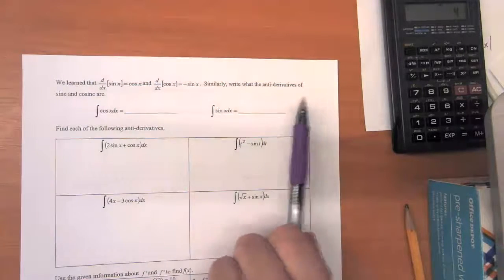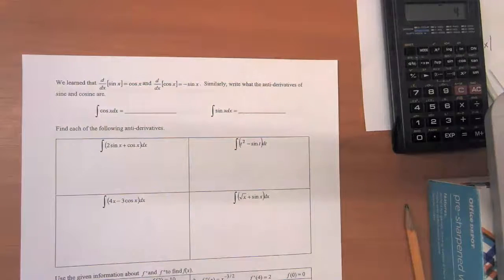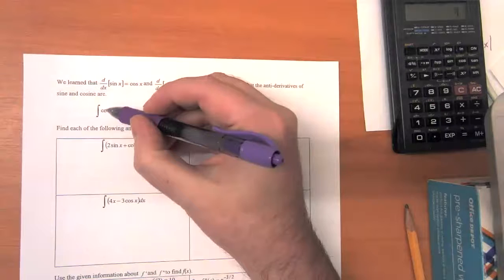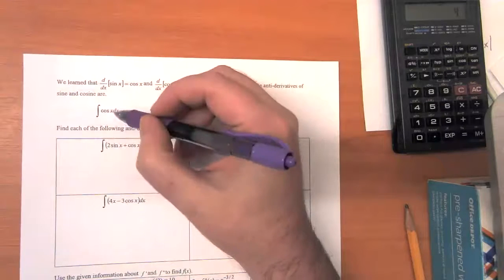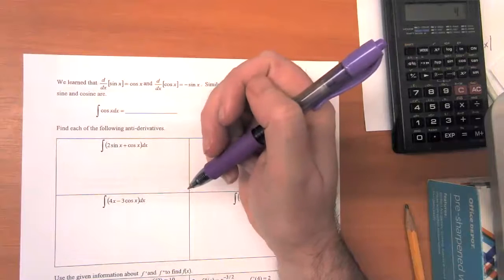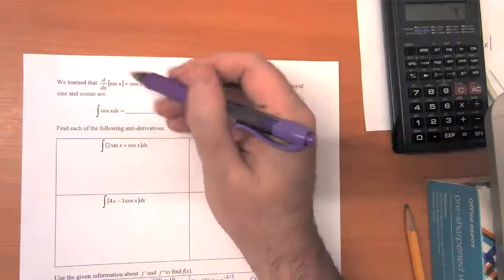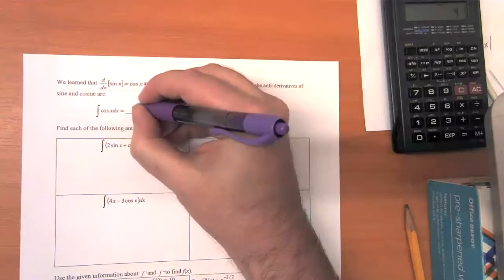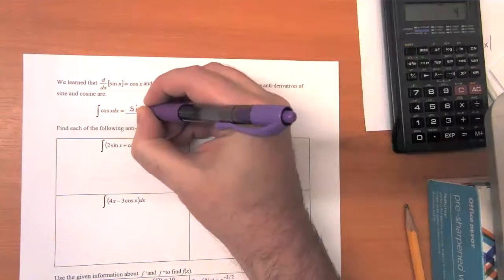So similarly, we want to write the antiderivatives of sine and cosine. So what do you think? The antiderivative of cosine of x dx - what function has cosine as its derivative? Well, right here, we see that it's sine. So that's sine of x.